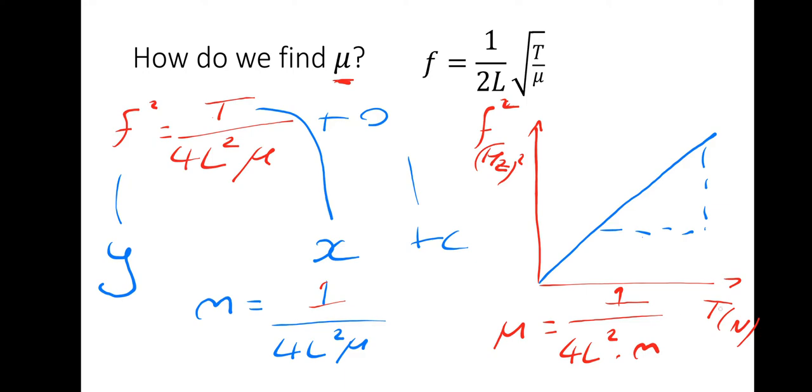So, experimental setup. Change the tension in the string. Use the cathode ray oscilloscope to see how it changes frequency. Plot a graph. And the gradient of the mu, the mass per unit length, is 1 over 4L squared times m, the gradient. So hopefully that makes sense. So let's move on from there.